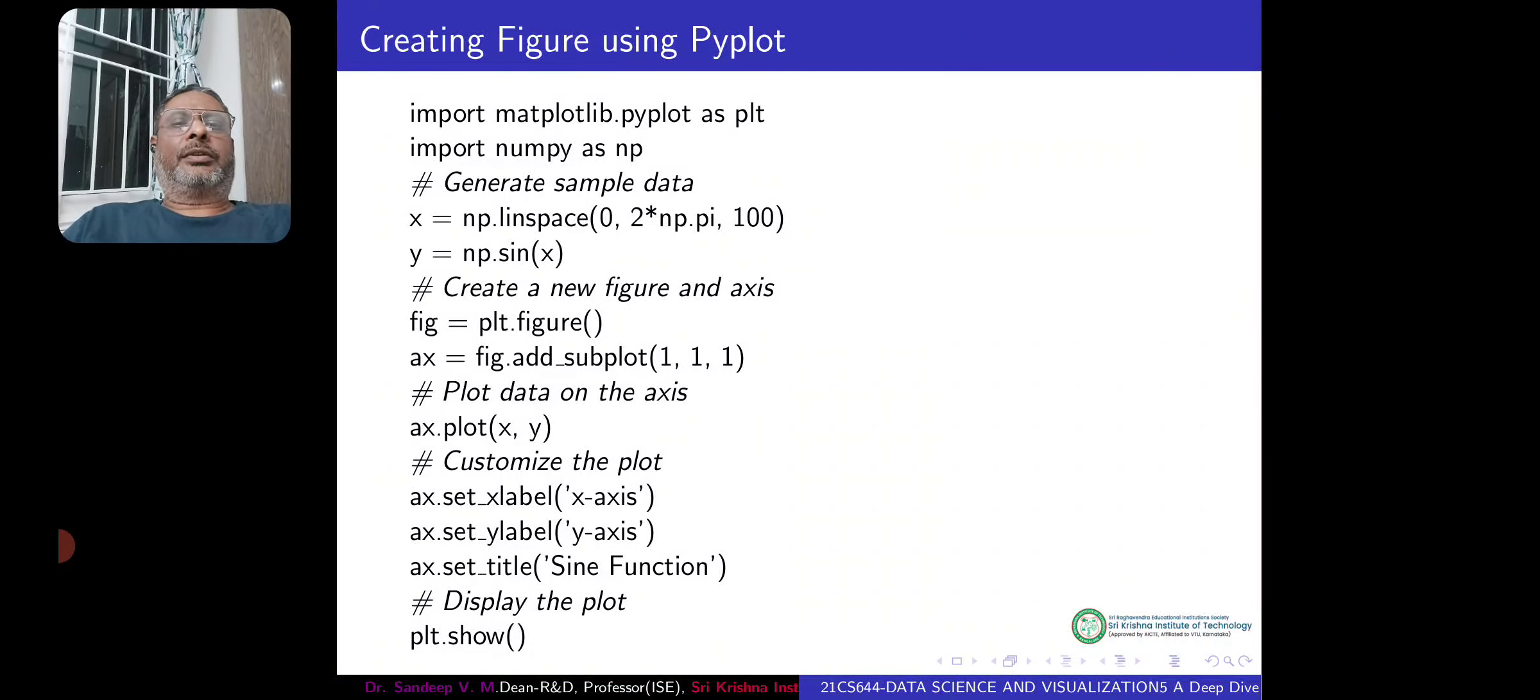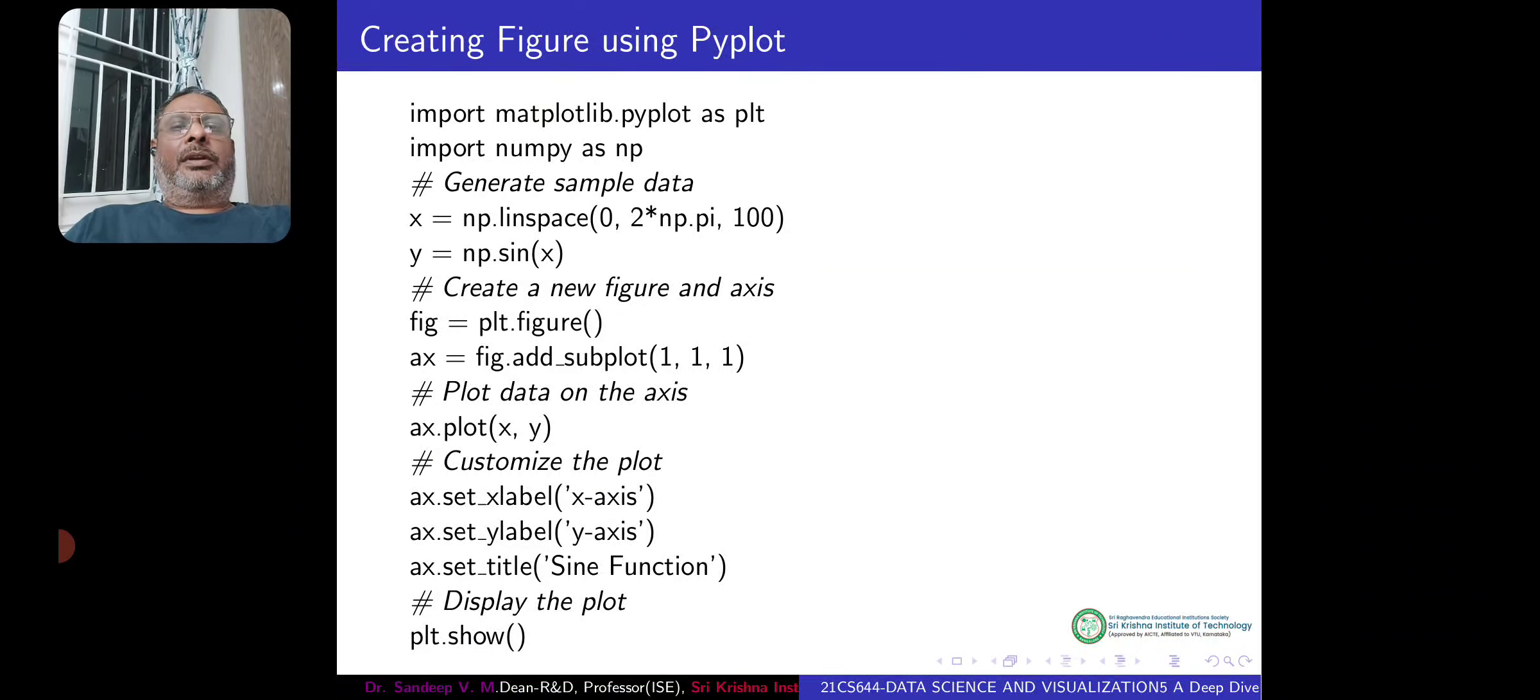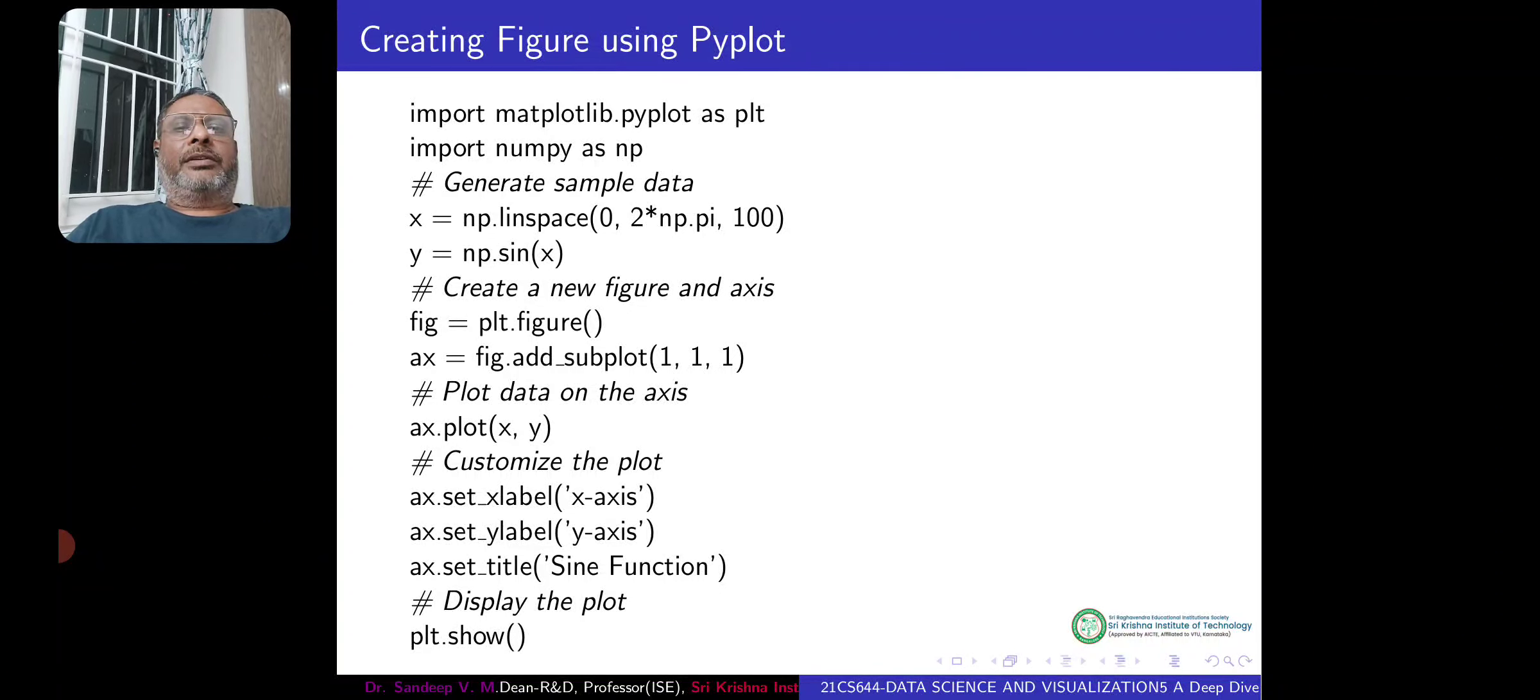So one row, one column, and first one. That's what 1, 1, 1 is. First one is the number of rows, second one is the total number of columns, and third one is the sequence number of the subplot. So here we are plotting only one thing, so we can just say 1, 1, 1. And then we say plot. Where to plot? Plot it on ax. What to plot? Along x-axis, x-value. Along y-axis, y-value.